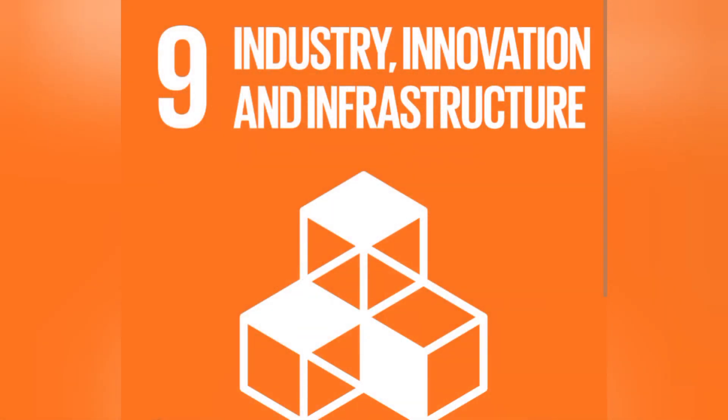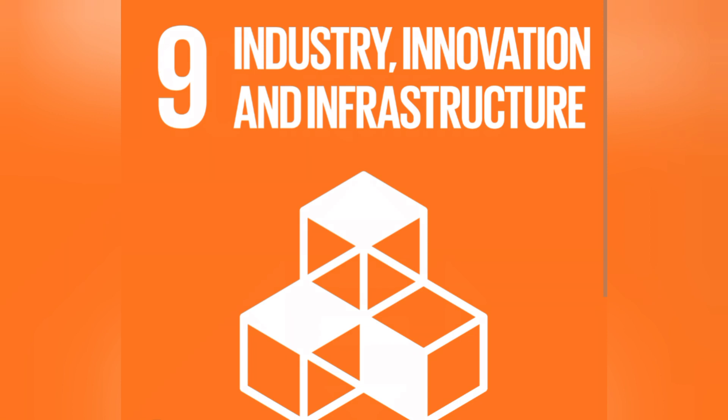Goal number nine, industry, innovation and infrastructure. Outcome target: increase access to financial services and markets, develop sustainable industrialization, develop sustainable, resilient and inclusive infrastructures. Some of the target implementations: facilitate sustainable infrastructure development for developing countries, support domestic technology and industrial diversification, universal access to information and communication technology.